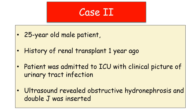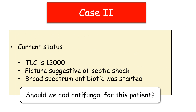The second case is a 25-year-old male patient with a history of renal transplant one year ago. The patient was admitted to the ICU with a clinical picture of urinary tract infection; ultrasound revealed obstructive hydronephrosis, and a double J was inserted. The total leukocyte count is 12,000, the patient has septic shock, broad-spectrum antibiotic was started, and the question is: should we add antifungal for this patient or not?